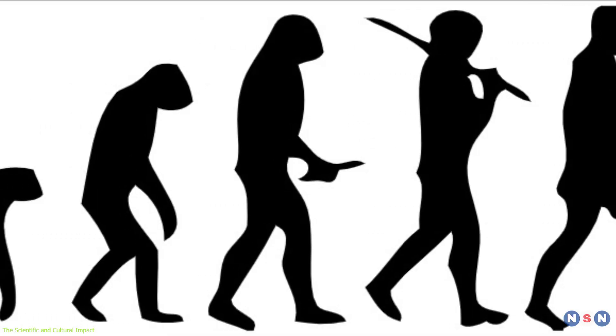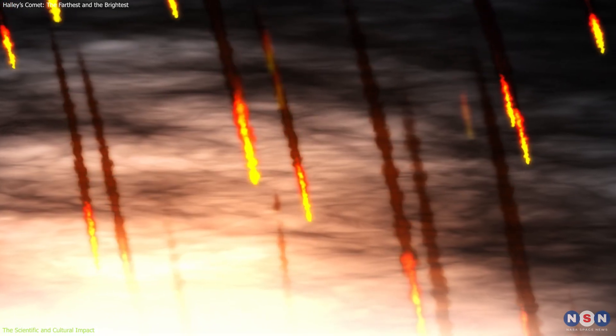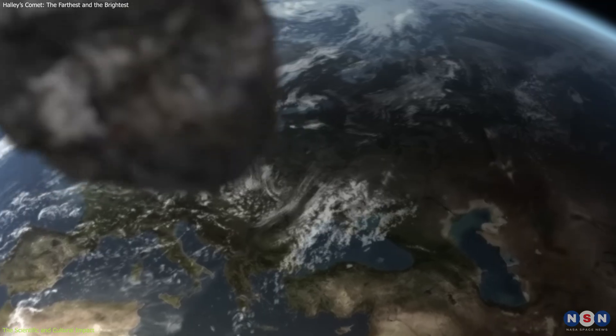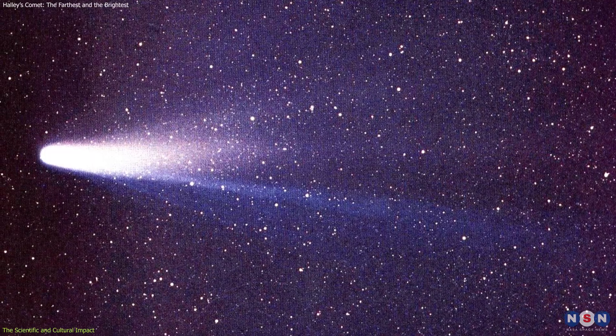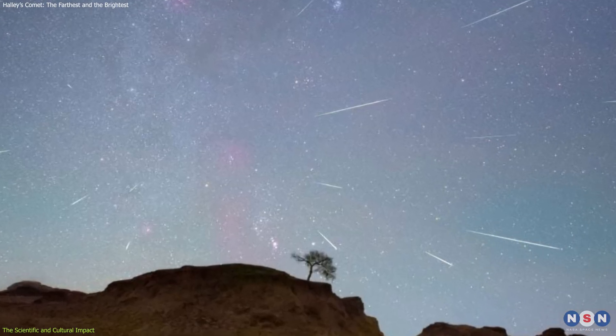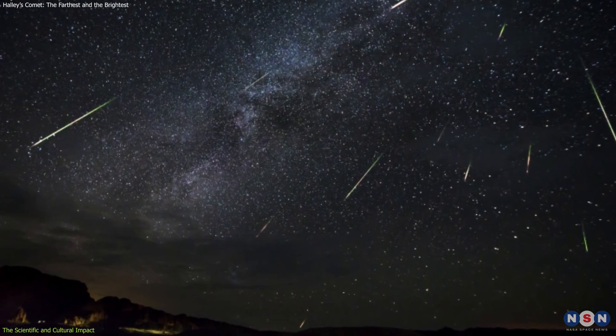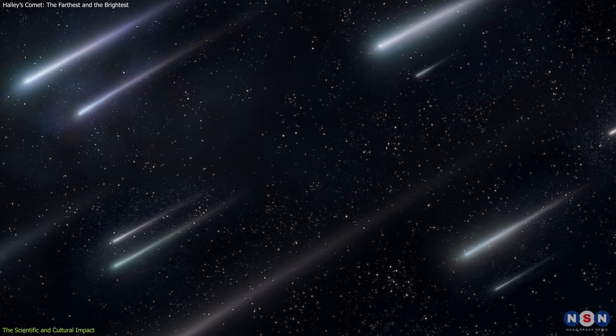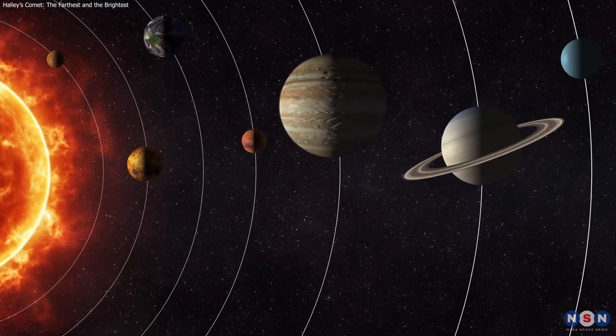One of the ways that the comet has impacted science is by generating meteor showers. These are events where many meteors, which are small pieces of rock or metal that burn up in the atmosphere, appear in the sky at the same time. Meteor showers are usually caused by the debris left behind by comets, as they orbit the Sun and shed gas and dust. Halley's Comet is the source of several meteor showers, such as the Eta Aquariids in May and the Orionids in October. These meteor showers are named after the constellations from which they seem to originate, and they can be seen from Earth every year, even when the comet is not visible. They are not only beautiful and spectacular to watch, but also useful and informative to study, as they can tell us more about the composition and structure of the comet, and the evolution and dynamics of the solar system.